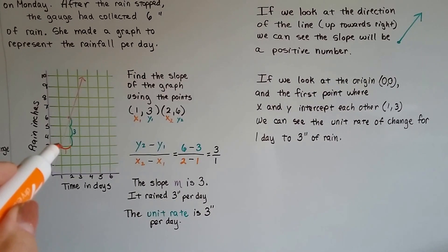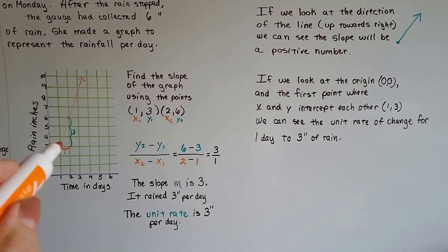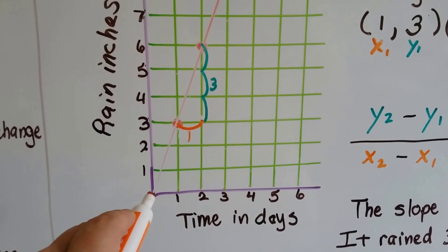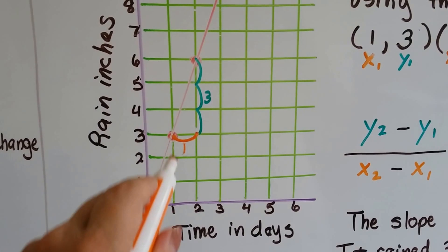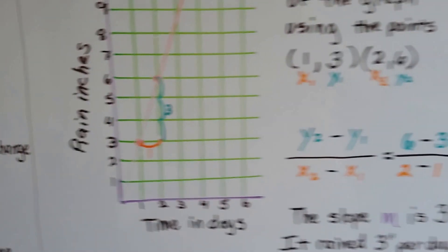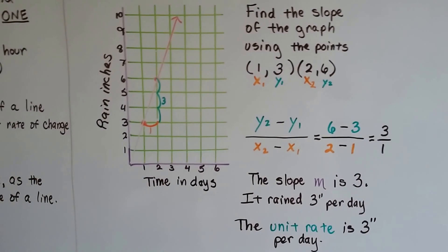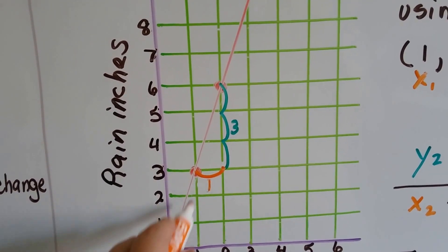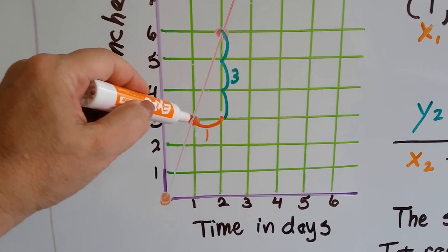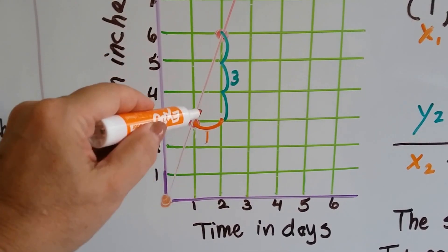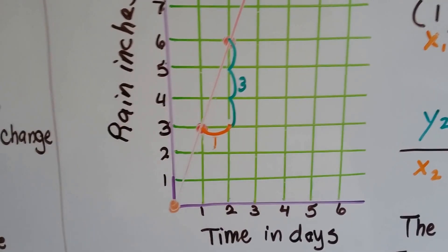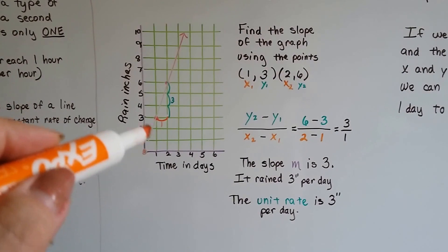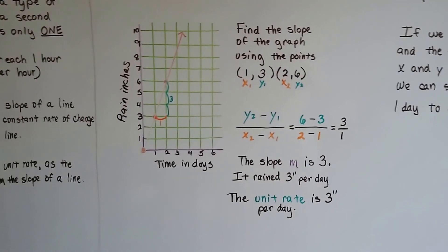Looking at the origin at (0, 0) and the first point at (1, 3), where x and y intercept each other for the first time, we can see the unit rate of change for one day is three inches. Just by comparing the origin to that first intersection, we can see it's one to three. We can also see the rise is three over a run of one — that's our three over one.